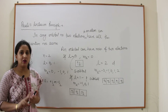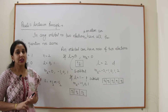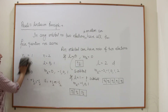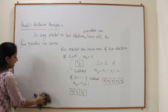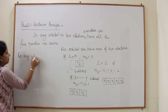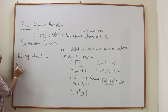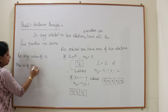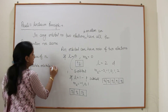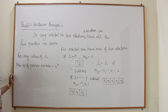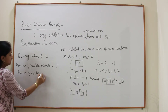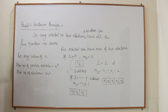For any shell n, the maximum number of possible orbitals is equal to n², and the maximum number of electrons is equal to 2n².